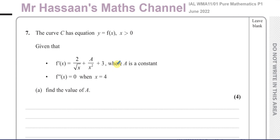This question is about a curve C which has the equation Y equals F of X, where X is greater than 0. We're told that F'(x), the first differential, the gradient function, is 2 over root X plus A over X squared plus 3, where A is a constant. And the second differential is equal to 0 when X equals 4. So we've got to find the value of A.